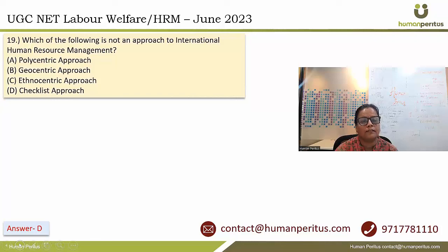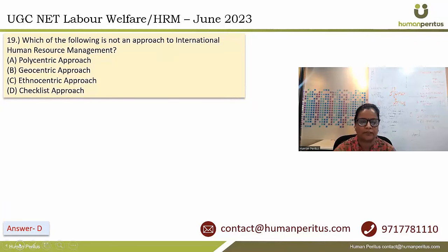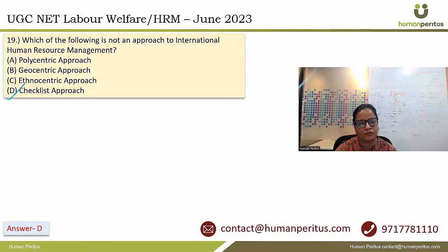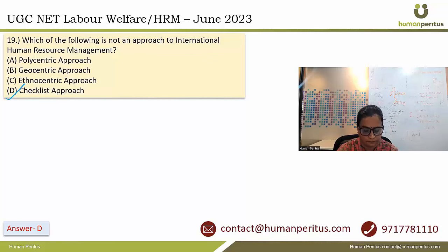Which of the following is not an approach to international human resource management? Polycentric, geocentric, and ethnocentric are all approaches to international HRM. However, the checklist approach — option D — is not an approach to international HRM. So the answer is D.